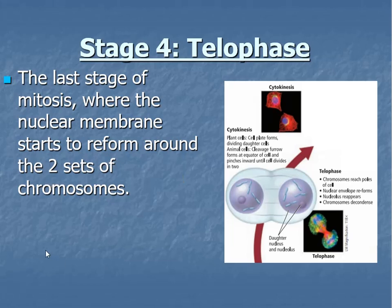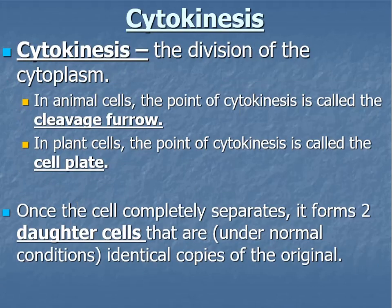This image covers both telophase and cytokinesis. Telophase is the last stage of mitosis where the nuclear membrane starts to reform around the two sets of chromosomes. Then it begins to pinch off — the pinching off is what we call cytokinesis. It's not technically part of mitosis, but it is what happens right after. If you look at the term cytokinesis, it breaks down to mean split in half. In animal cells, the point of cytokinesis is called a cleavage furrow, and in plant cells it is called a cell plate. Once these cells have completely separated, it forms two daughter cells that are, under normal conditions, identical copies of the original cell.